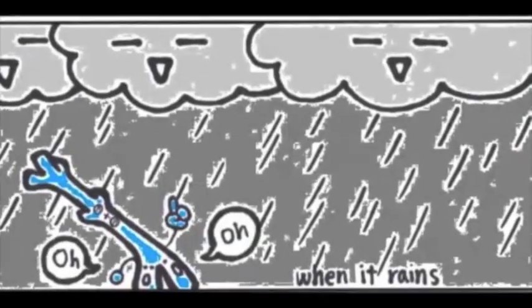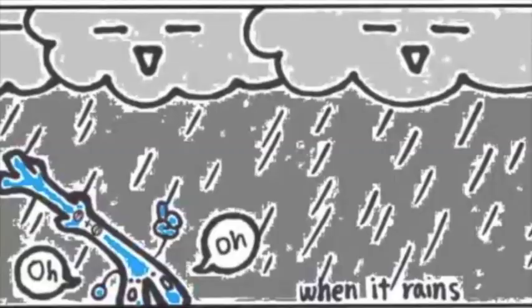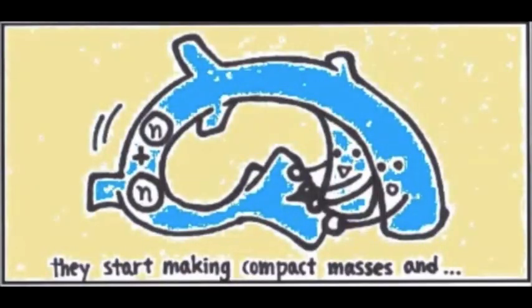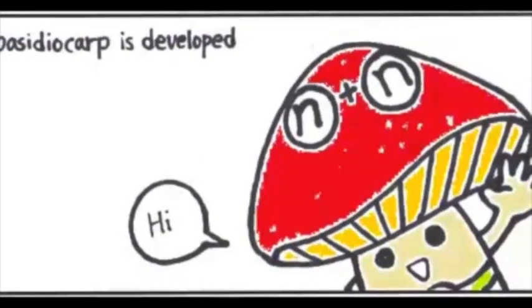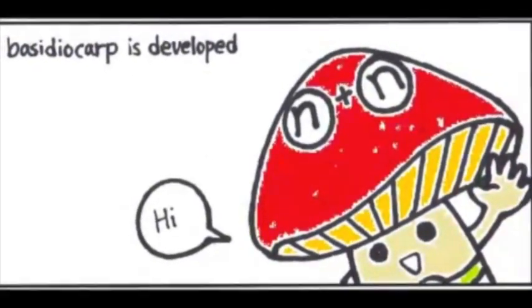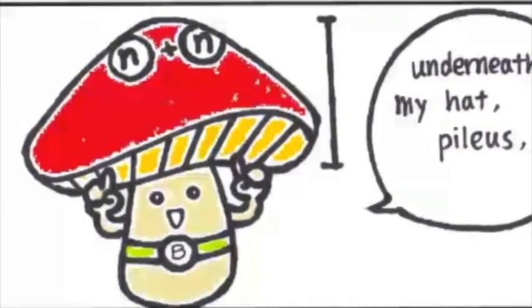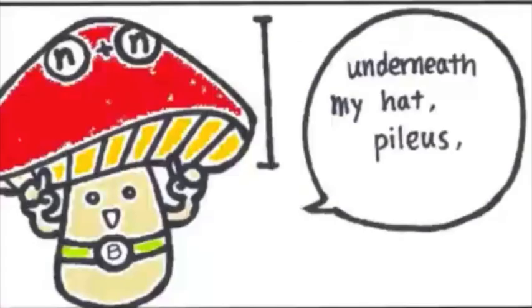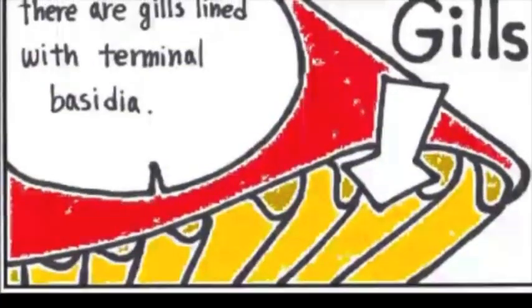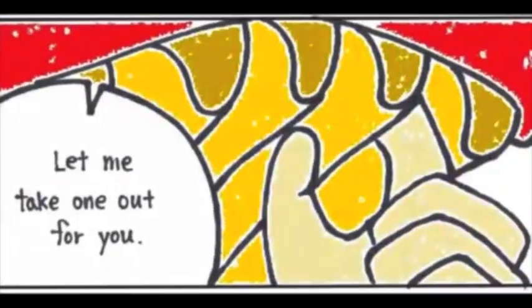Environmental cues, such as rain, induce the dikaryotic mycelium to form compact masses, until finally the Basidiocarp forms. My name is Dikaryotic Basidiocarp, and I'm almost ready for sexual reproduction. Underneath my hat — my pileus — there are gills lined with terminal Basidia.